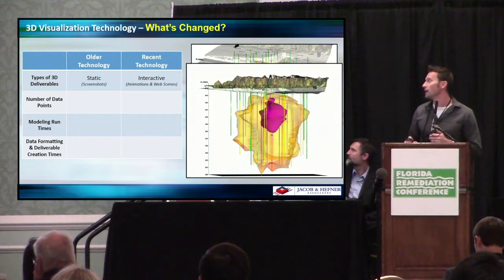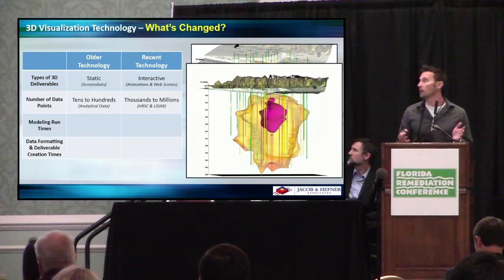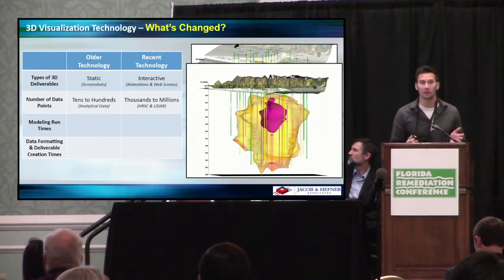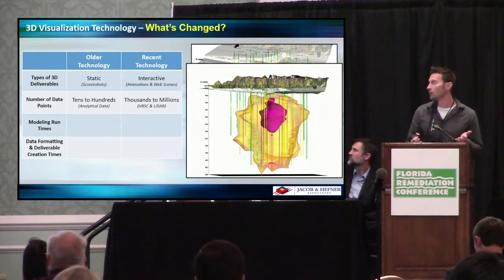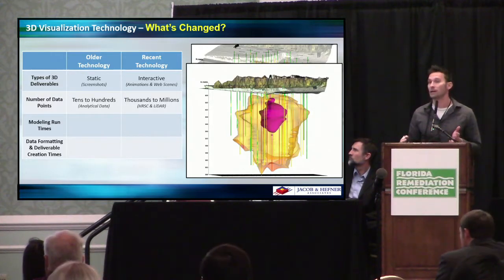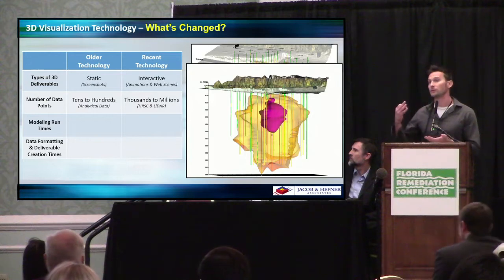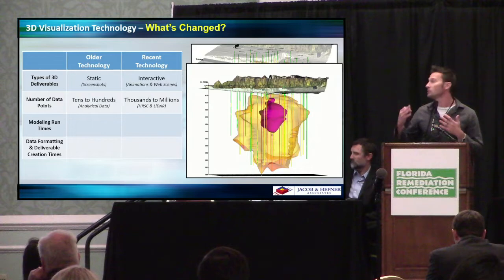Secondly, the number of data points. Previously, you were lucky to get 100 or a couple hundred data points — typically from analytical data, soil and groundwater sample results, or boring logs. Now we have HRSC data and LIDAR data. We're getting thousands or even millions of data points from a membrane interface probe, laser-induced fluorescence tools, and CPT data. You just generate an immense amount of data very quickly.